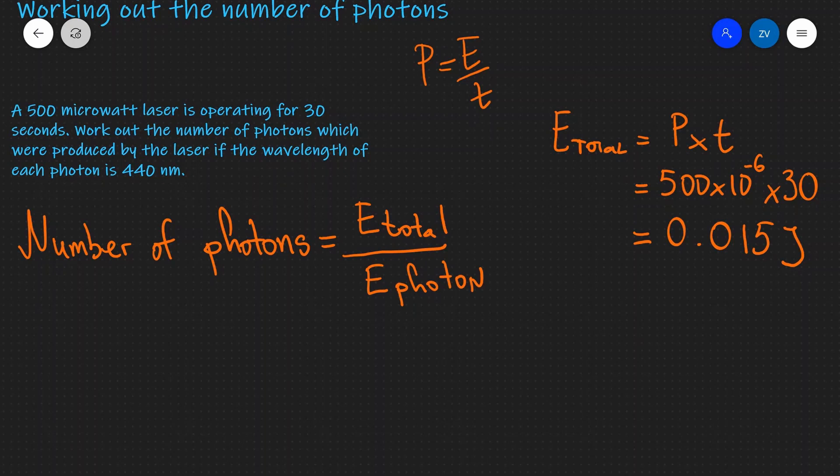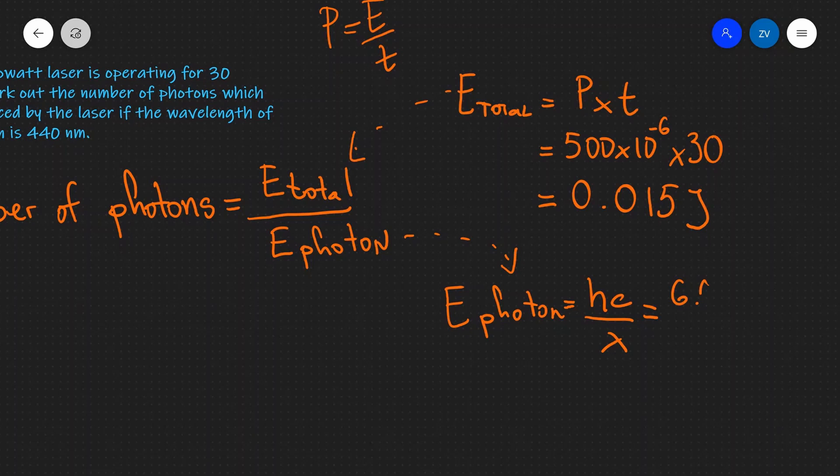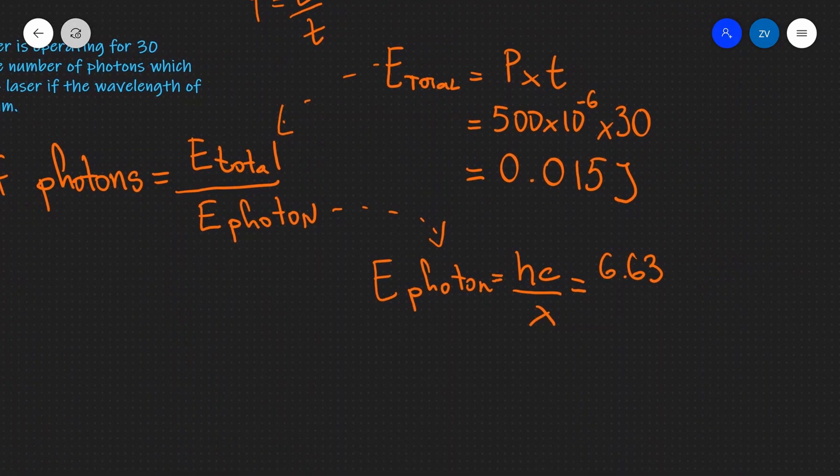Now the energy of an individual photon, I know we calculated that a moment ago, but let's just for practice, let's just quickly do it again. This is going to equal to hc over lambda, which is going to give us 6.63, remember that's the value of h, times 10 to the power of minus 34 multiplied by 3.0 times 10 to the power of 8.